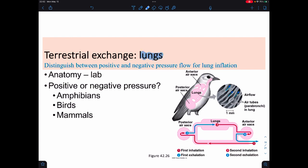Us terrestrials use lungs, and we'll talk more about that in the lab. Birds utilize what we call a positive pressure system. Amphibians also do too. Us mammals, we use a negative pressure system.